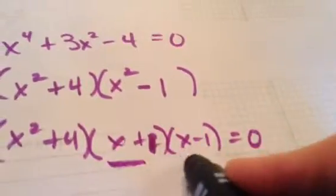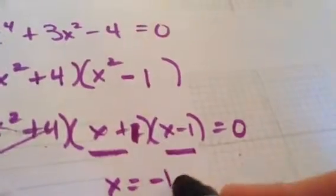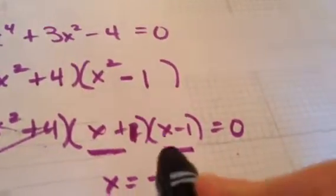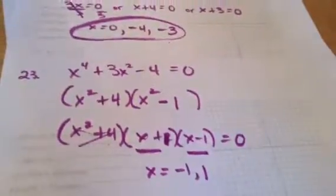Set each of these factors equal to zero. This one will never equal zero. You can't do anything with it. But you're going to get x equals negative one or positive one. Because think about it, if you put a one in there, one minus one is indeed zero. Okay, so that should do it. Let's go.